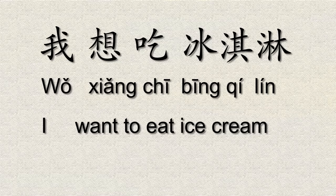Now let's move on to the important section, which is using 想 and 要 in a full sentence. If I say 我想吃冰淇淋, that means 'I want to eat ice cream,' but it's more like expressing a desire — like you're sitting there daydreaming about eating ice cream. It doesn't necessarily mean you're going to follow through and actually eat it.